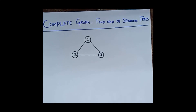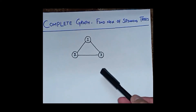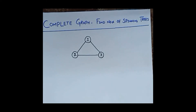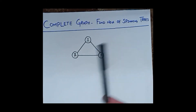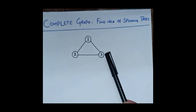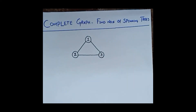Welcome. In this video I will show you how you can find the number of possible spanning trees from a complete graph. This is a complete graph, and here you see that from every node we can reach another node by an edge. As one is attached with two and three, two is attached with one and three, and three is also attached with the other two. Every node is attached by an edge to all other nodes, so this is called the complete graph.